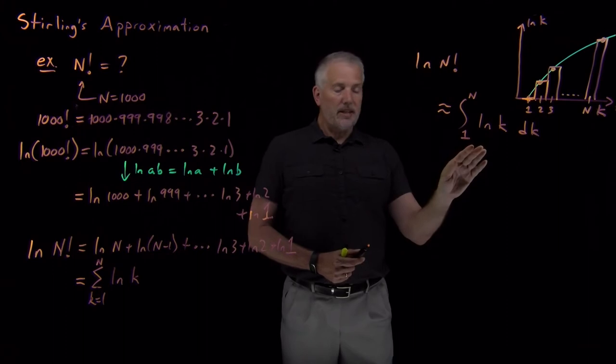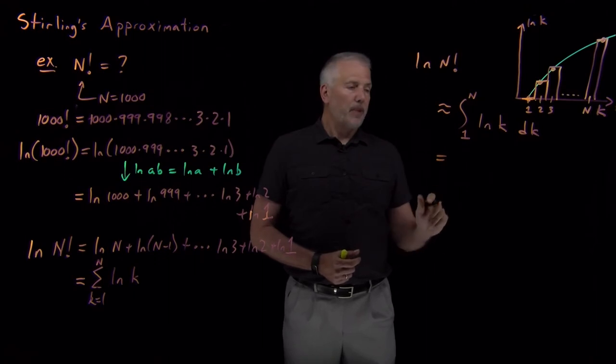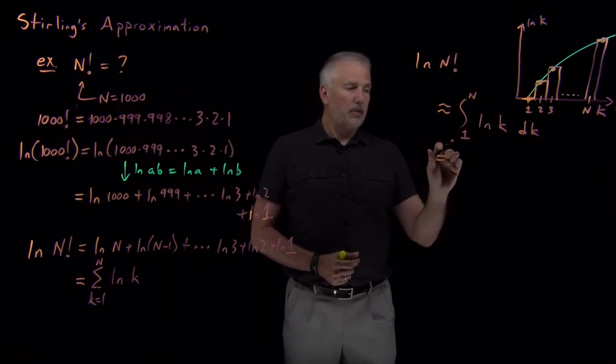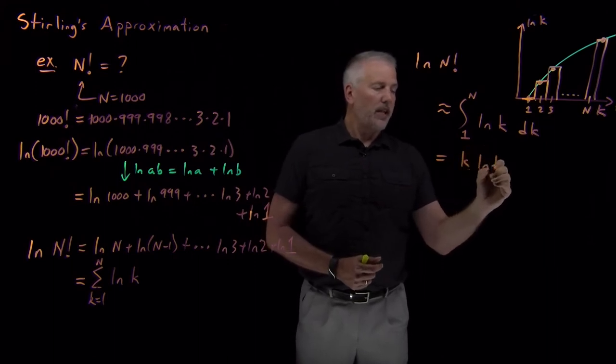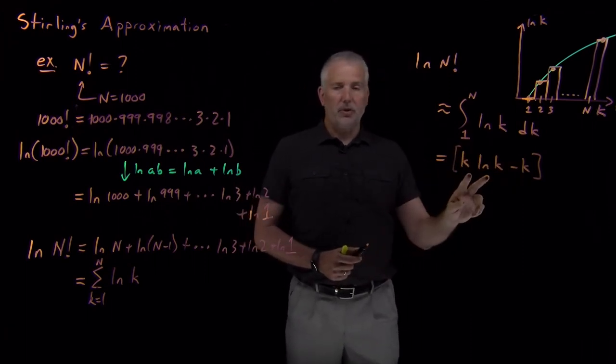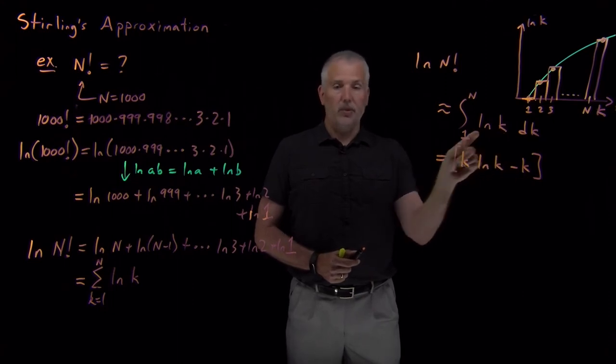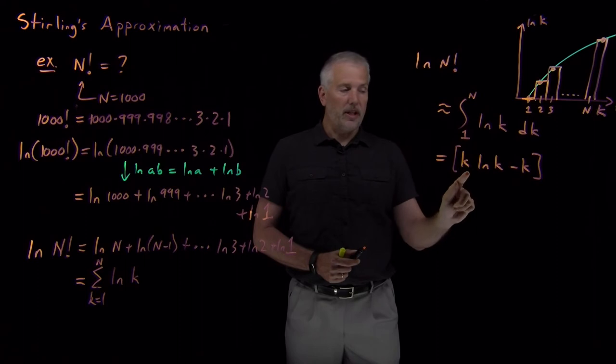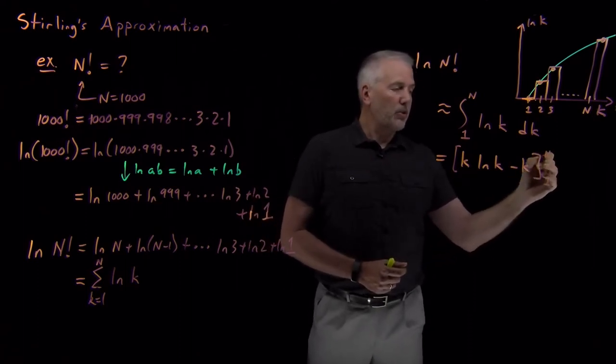But now that we've written it as an integral, we can do the integral. Integral of log k is perhaps not one that's easily commonly memorized, but it turns out integral of log k is k log k minus k. If you want to double check that's true, and I encourage you to do this, pause the video right now. Take the derivative of k log k minus k. A little bit of simplification happens, and you'll find that the derivative of this quantity is log k.